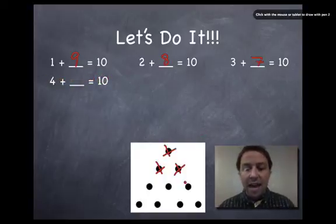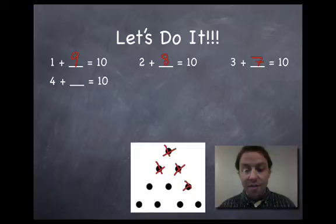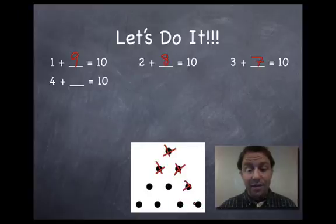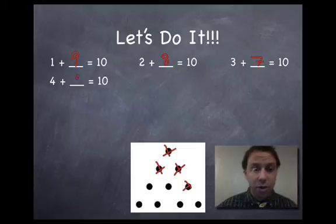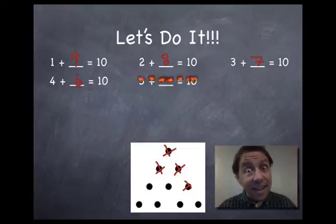4 plus what equals 10. We're gonna cross out one more dot. Now we've crossed out 1 2 3 4 so we can find out the remainder to see the other additive to 10. 1 2 3 4 5 6. Alright guess what's next?